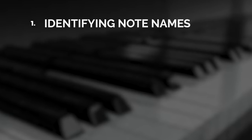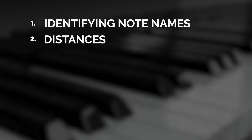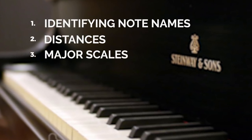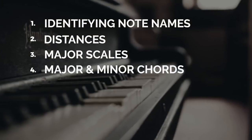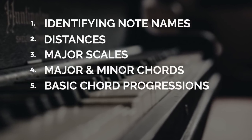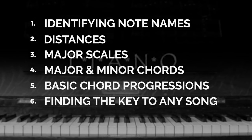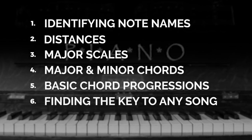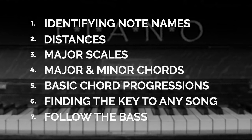This is lesson one, and what we're going to do is talk about the notes of the piano and how to identify them. In lesson two we'll talk about distances — the distance between notes. In lesson three we'll cover major scales and how to form them for every key. Lesson four covers major and minor chords. Lesson five covers basic chord progressions. Lesson six is about finding the key to any song, which is very important for playing by ear. And lesson seven is about how to follow the bass to determine the song's chord pattern.